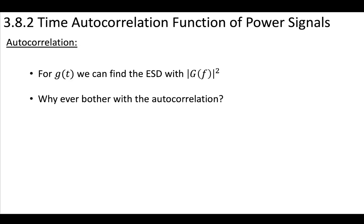So let's go back to this idea of autocorrelation. Recall for some signal G(t), if this is an energy signal, we can find the energy signal density in the frequency domain. And for a lot of energy signals, it's pretty easy to do the Fourier transform. So why would you ever bother with doing autocorrelation, which is usually a little bit difficult?